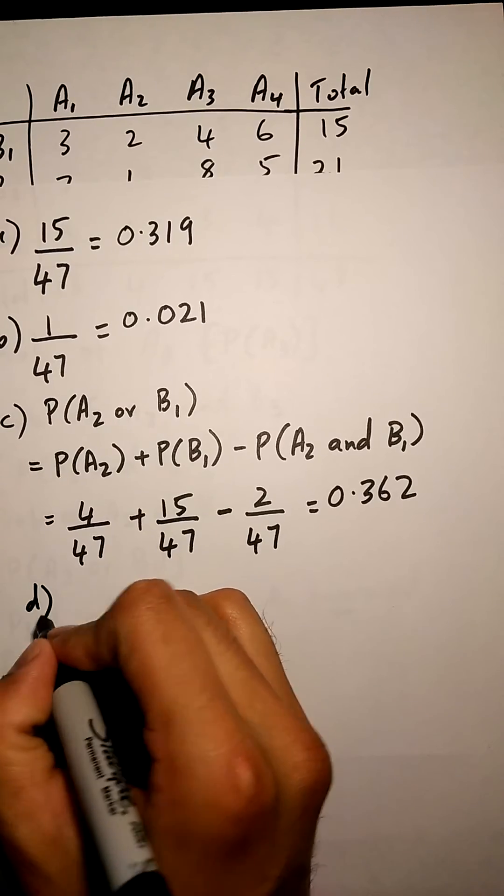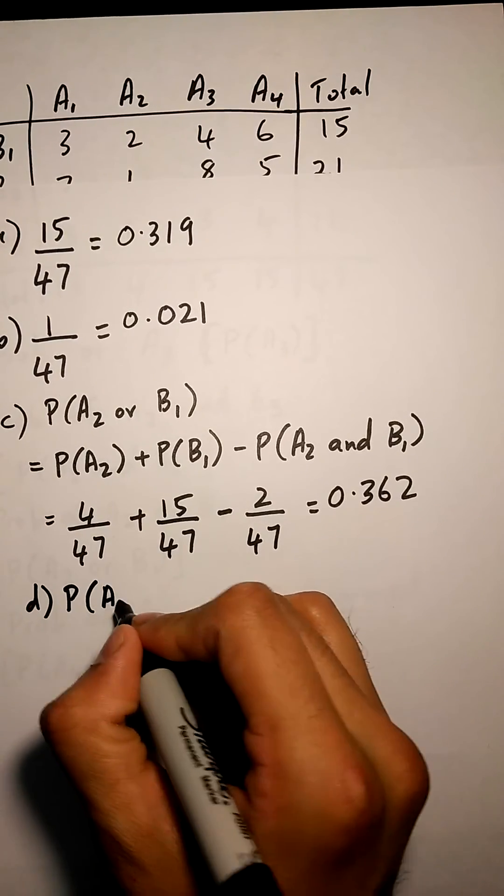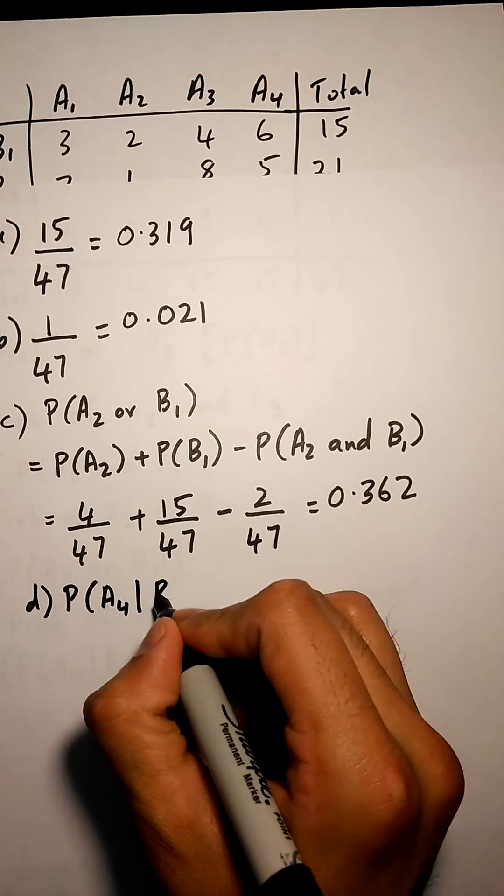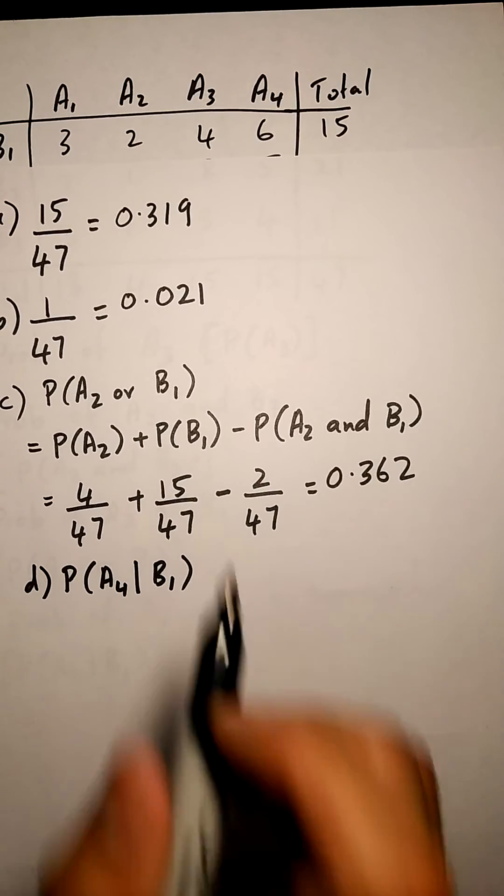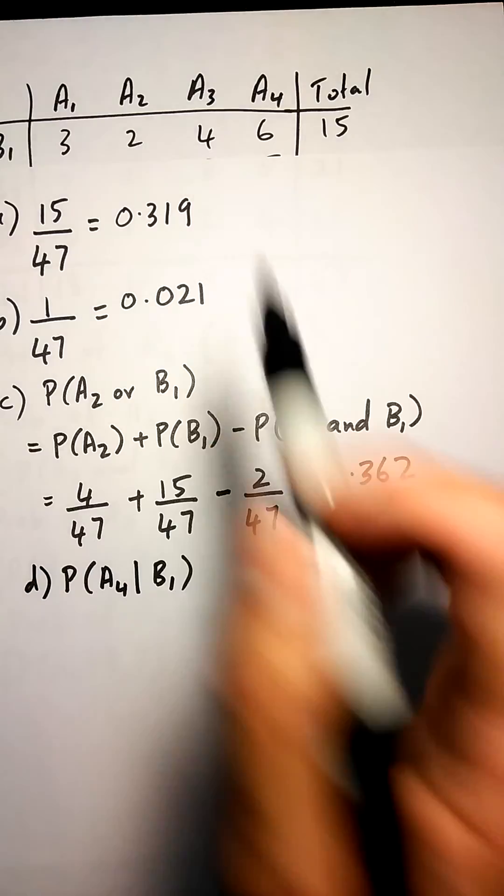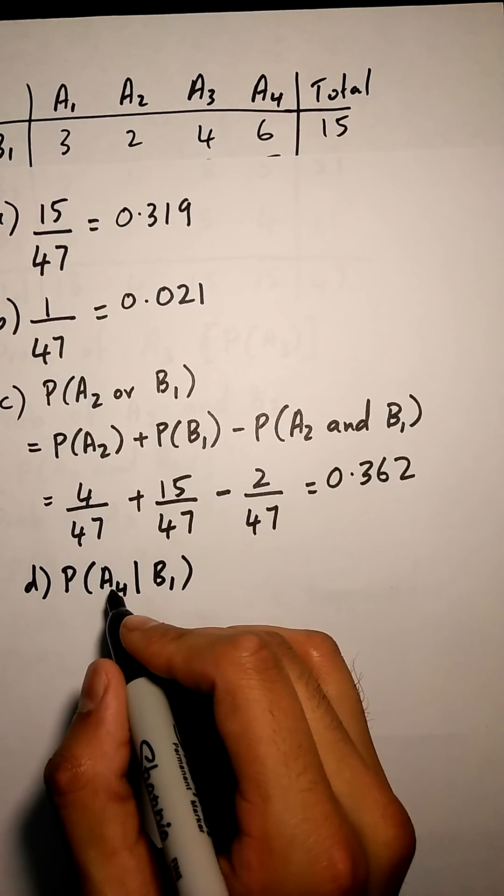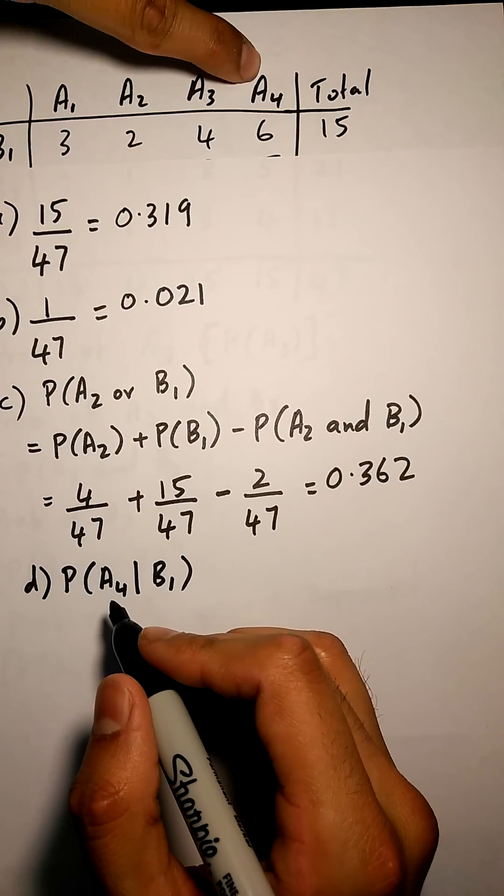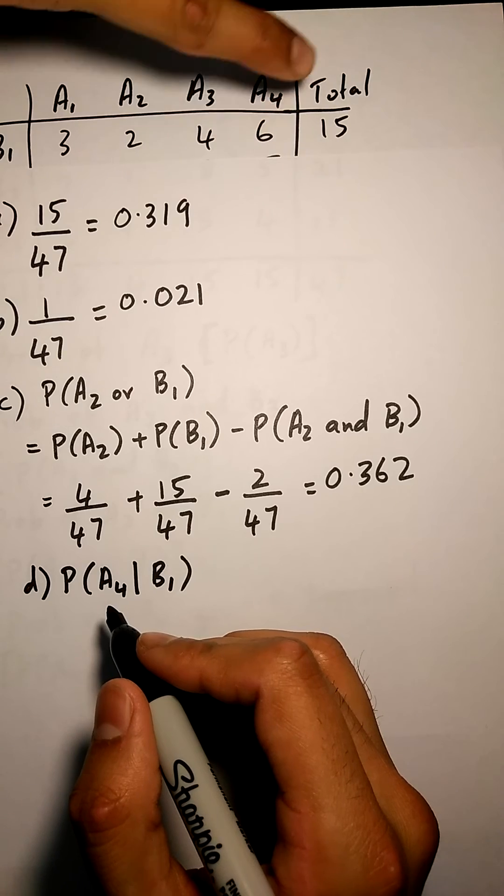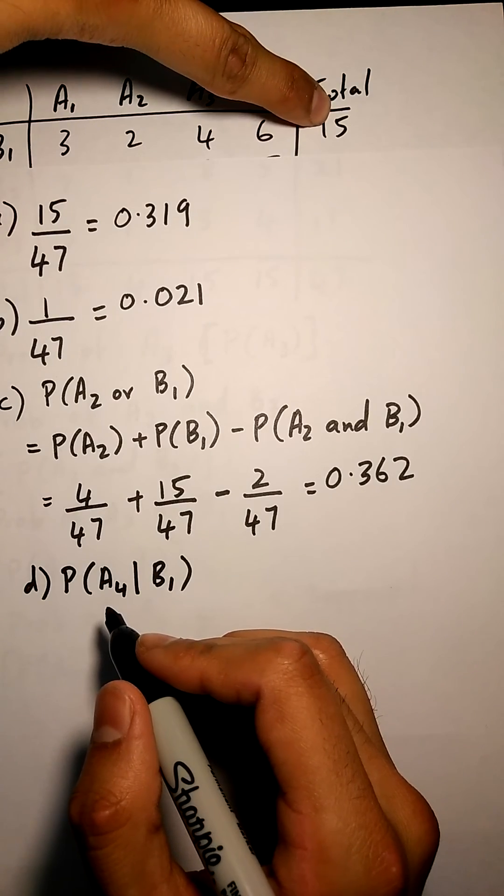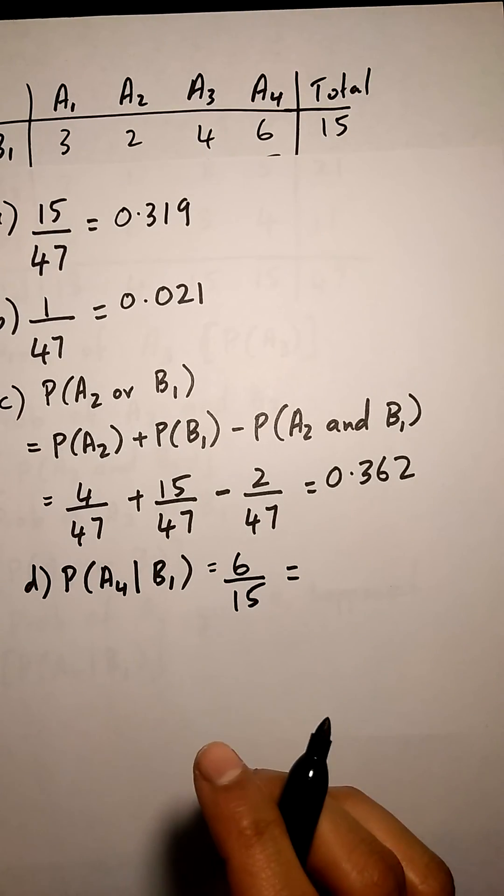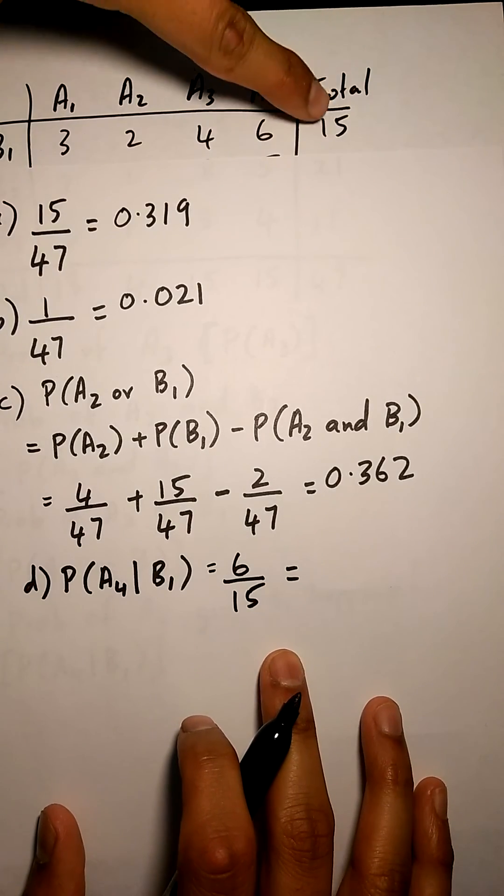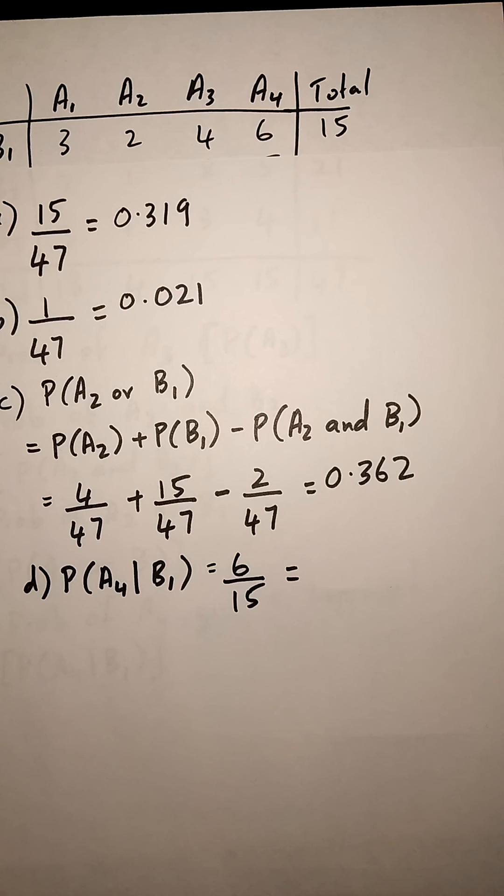We know that B1 has happened. The probability of A4 is just 6, and the total probability is now 15. So in given questions, most likely your total will be much smaller than the rest of them.